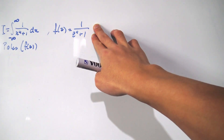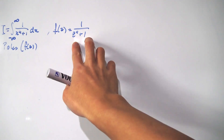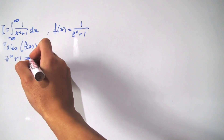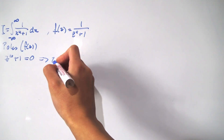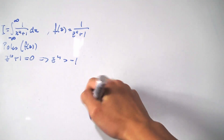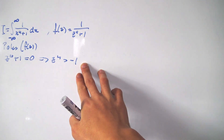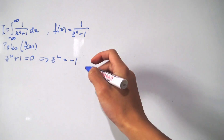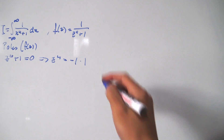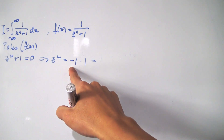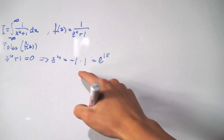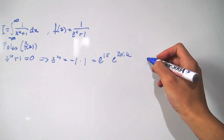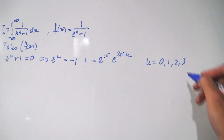We want to know where this function blows up — it blows up when the denominator equals 0. So we find where z to the 4th power plus 1 equals 0, which implies z to the 4th power equals negative 1. We want to rewrite negative 1 in polar form. Negative 1 is exactly e to the i pi, and we multiply by 1 written as e to the 2πik, where k equals 0, 1, 2, and 3.